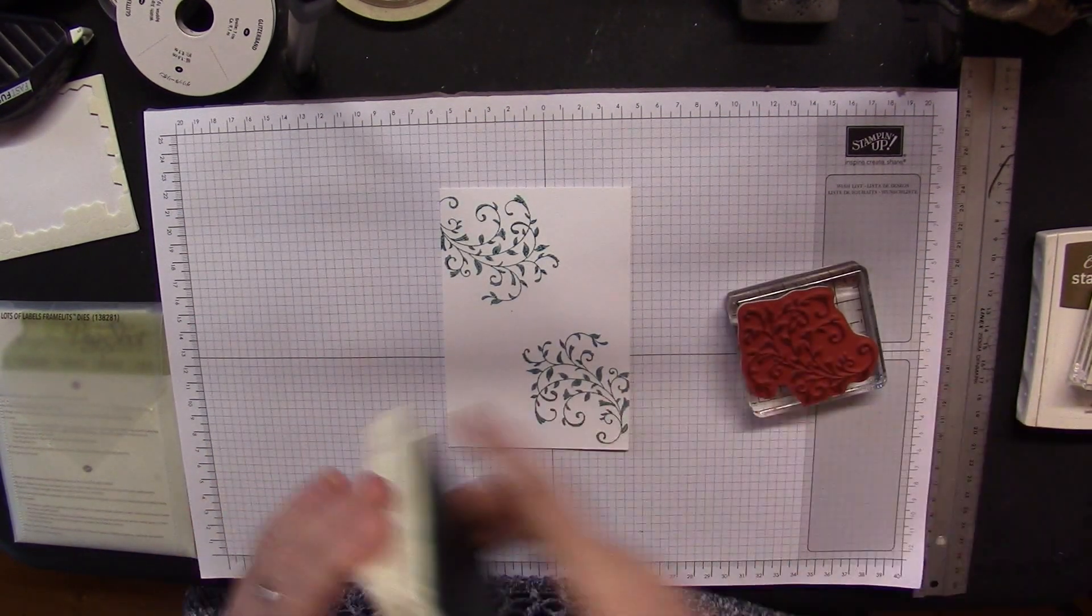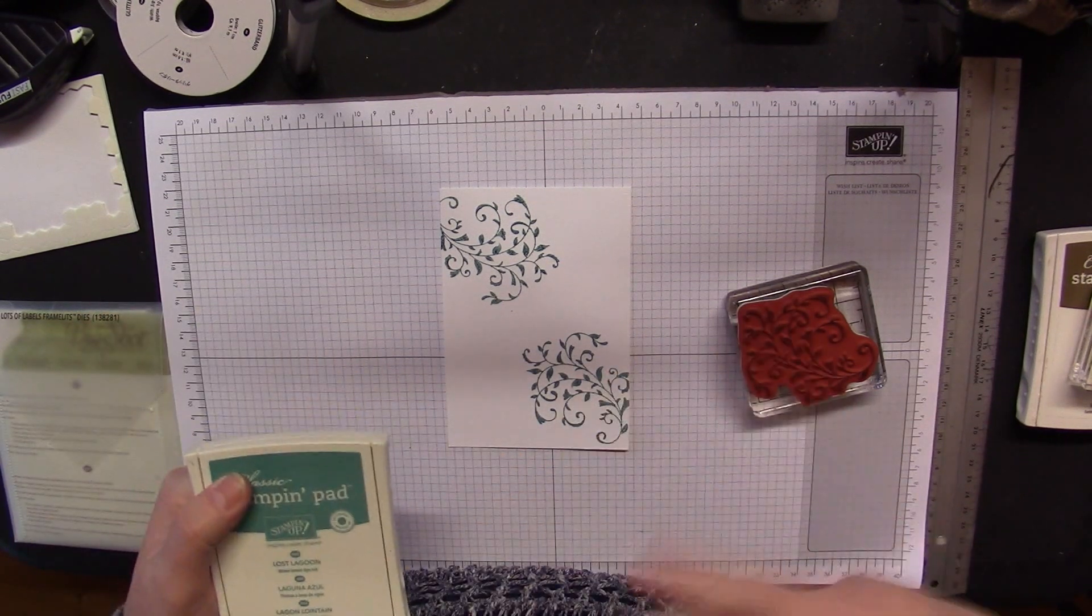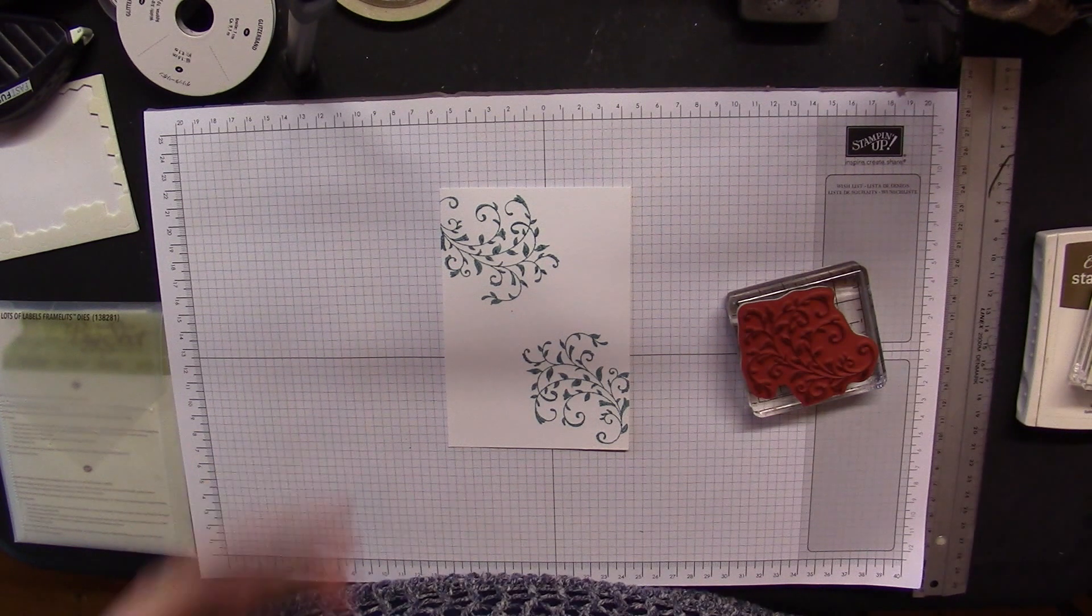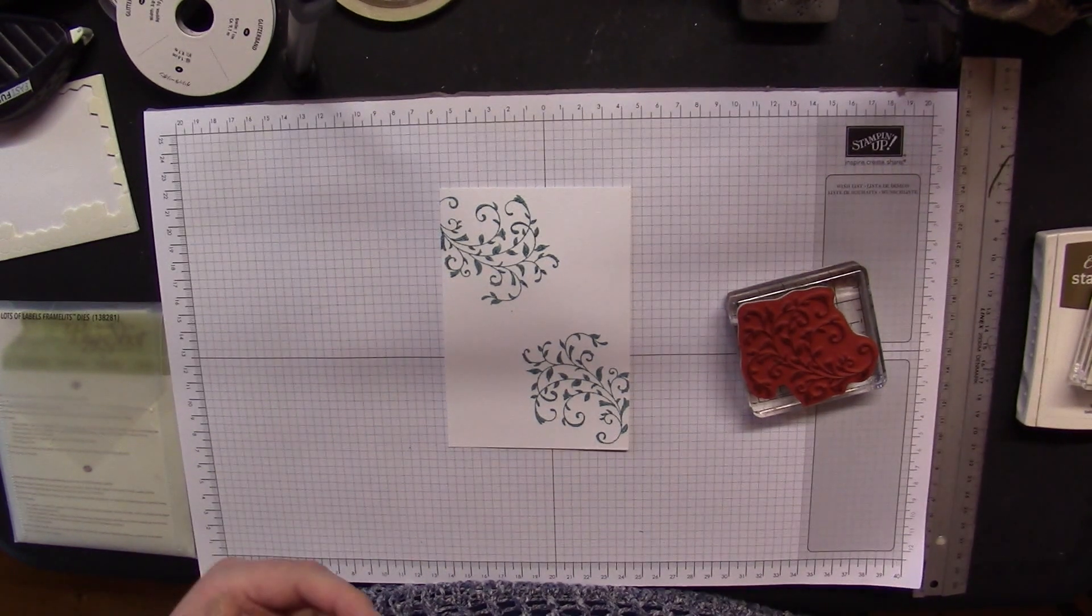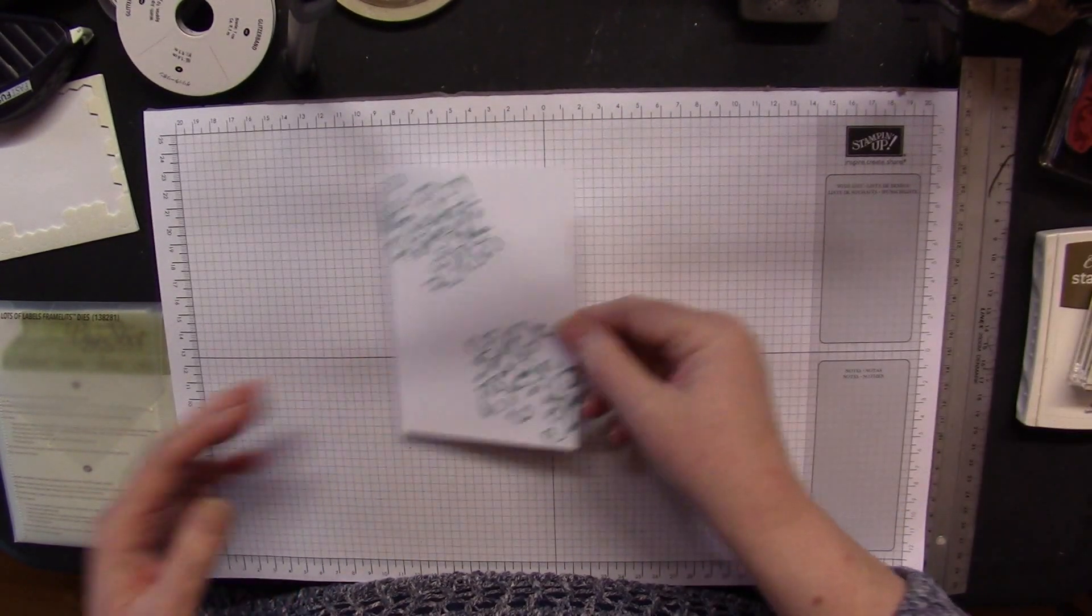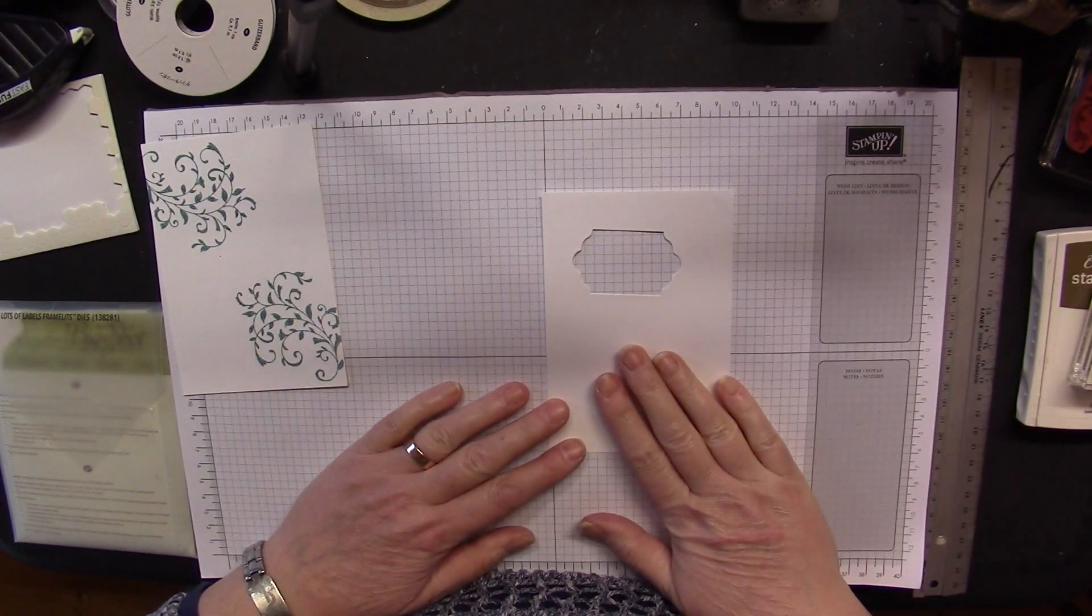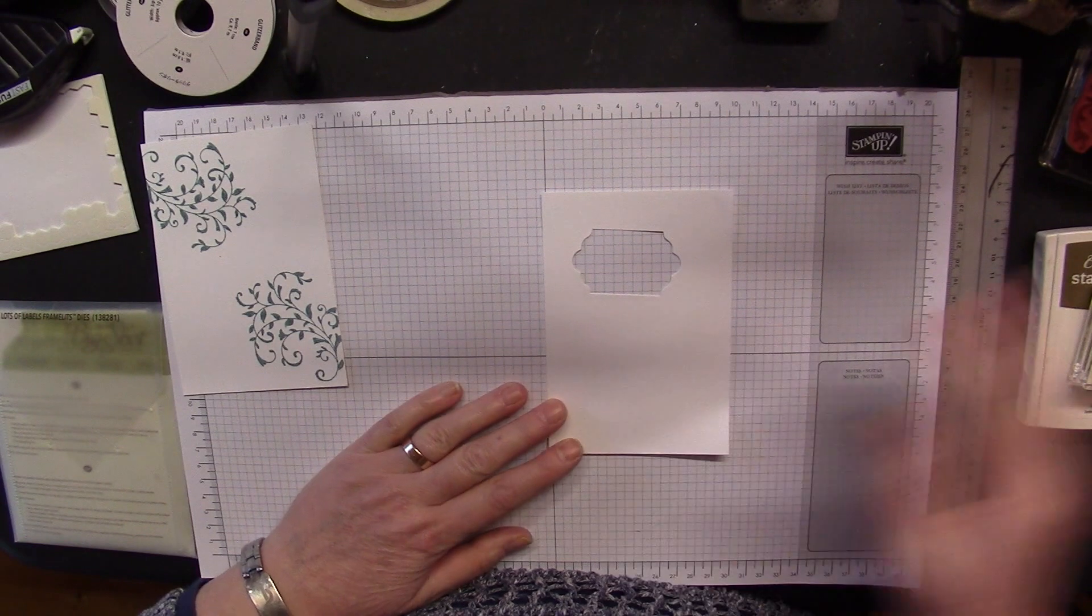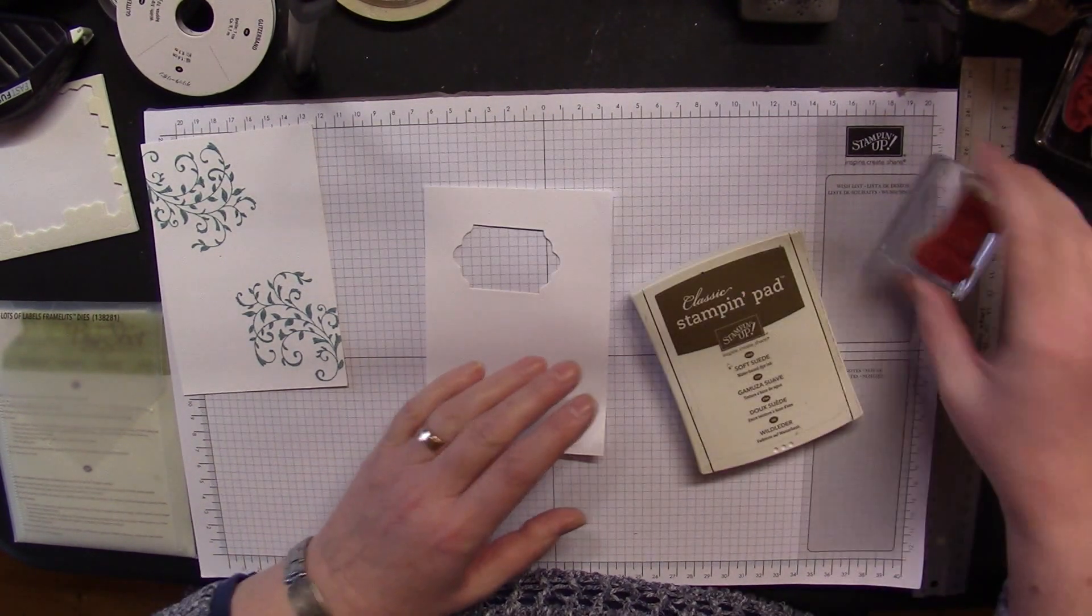I've inked up each time. Sometimes I use second and third generation stamping, but I wanted the nice intense color on this. The colors do lighten a little bit as it dries. Then onto a scrap piece of Whisper White cardstock you're going to stamp.